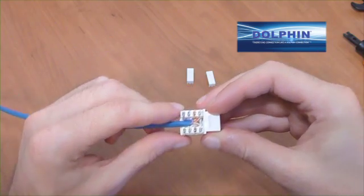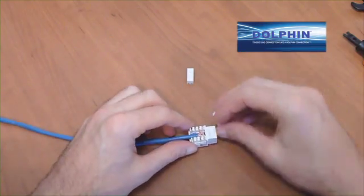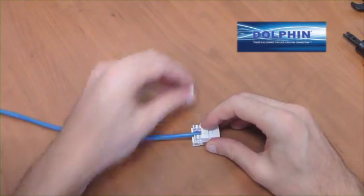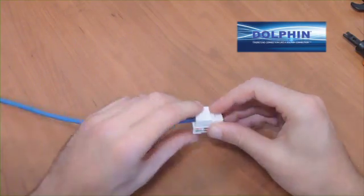Once twisted pairs have been secured, apply cap to protect connections when jack is in the wall. Use a 5e or 6 connection tester to certify the connection.